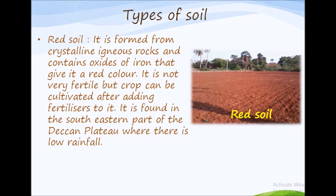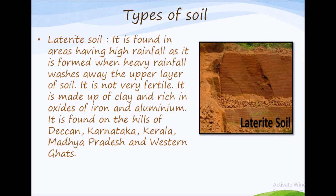Red soil contains oxides of iron that give it a red color. It is not very fertile but crops can be cultivated after adding fertilizers. It is found in the southeastern part of the Deccan plateau where there is low rainfall. Fourth is laterite soil — found in areas of high rainfall, as heavy rainfall washes away the upper layer of soil. It is not very fertile, made up of clay and rich in oxides of iron and aluminium. It is found on the hills of Deccan, Karnataka, Kerala, Madhya Pradesh and the Western Ghats.